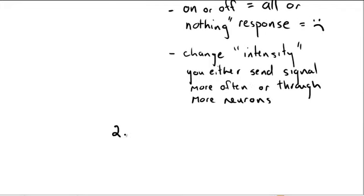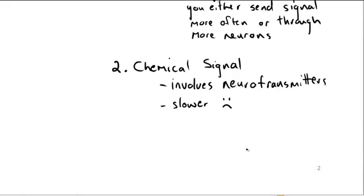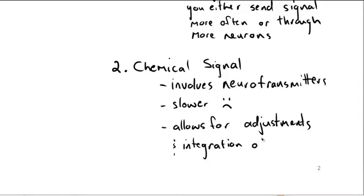The second part of a nerve impulse is the chemical signal. We're going to talk about that next day. But the chemical signal involves what's called neurotransmitters. And compared to the electrical signal, it is slower, and it's why we don't rely on it in and of itself. But it does have a benefit in that it allows for adjustments and integration of multiple inputs.